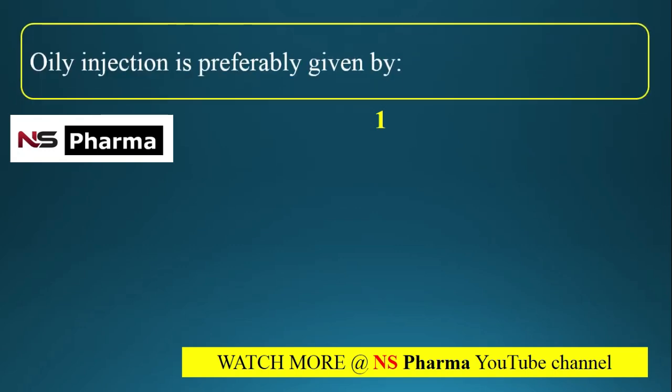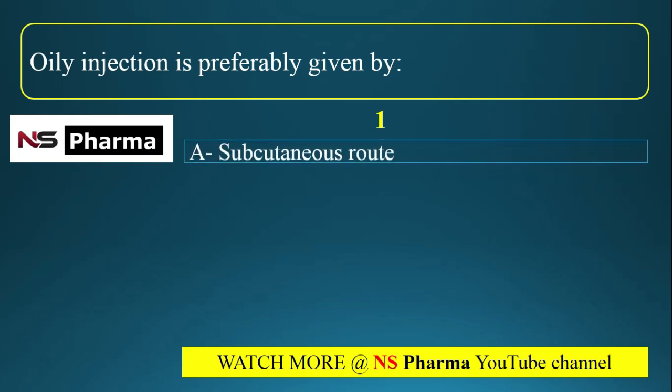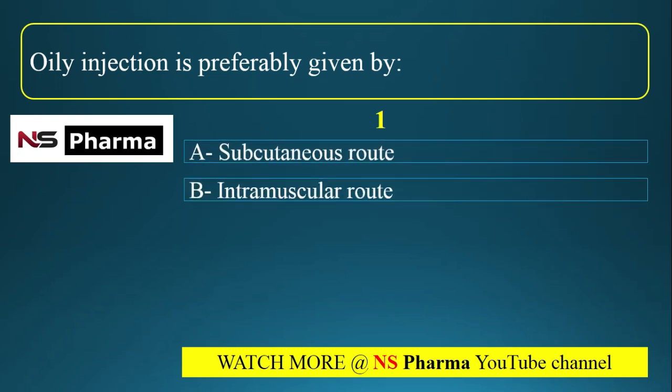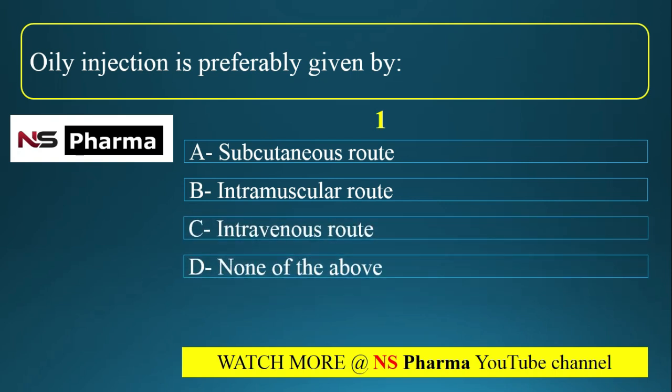The first question is: oily injection is preferably given by. Options are: option A, subcutaneous route; option B, intramuscular route; option C, intravenous route; option D, none of the above. Through which route can we give an oily injection? Which route is preferred for giving oily injection?